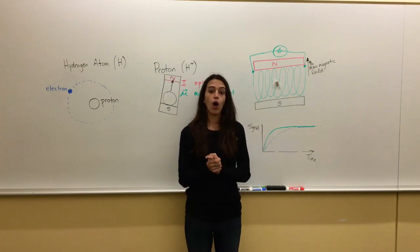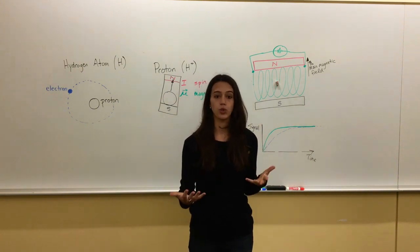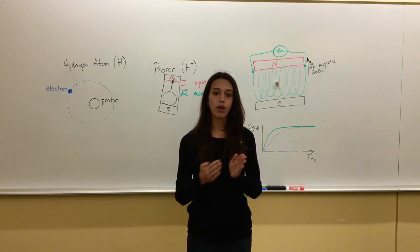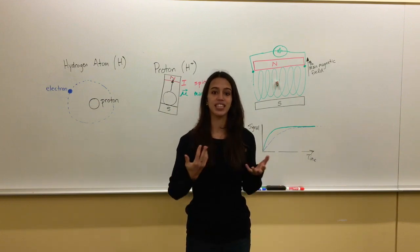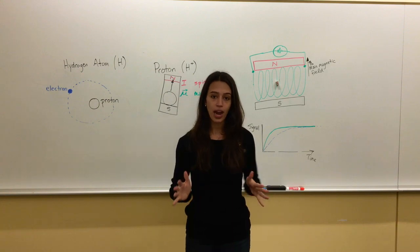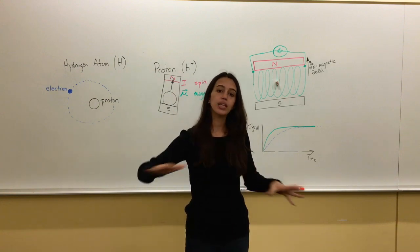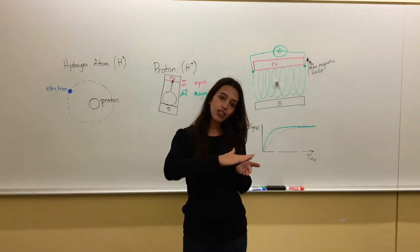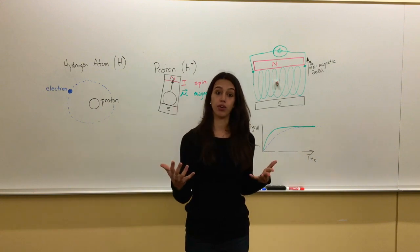So we basically have all these protons from different tissues, or really just different environments, that are coming up at different rates. We call them relaxing at different rates. Now for an MRI image, we flip down millions of protons at the same time, and they're each going to rise back up at their own different rates.